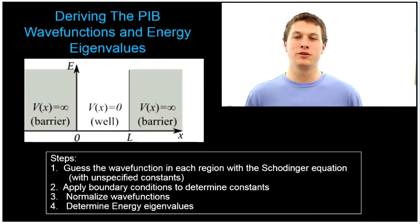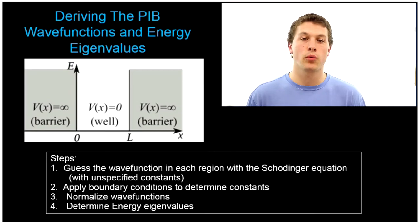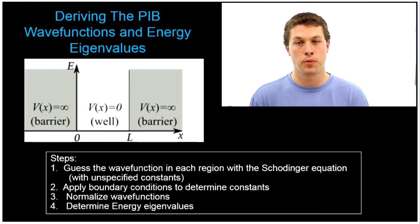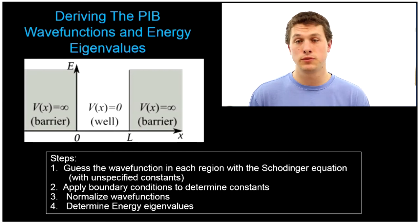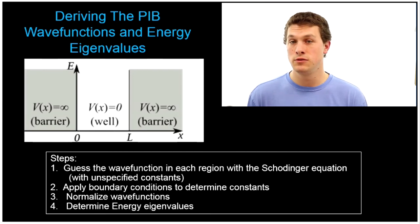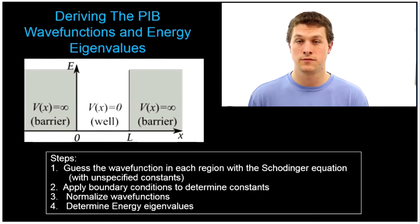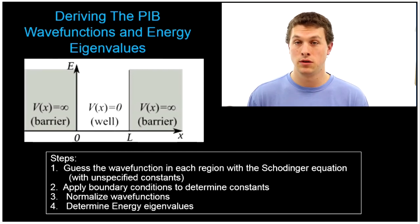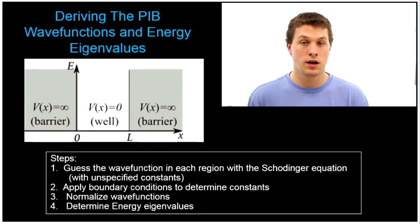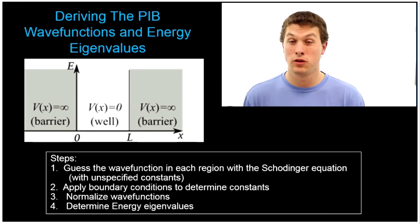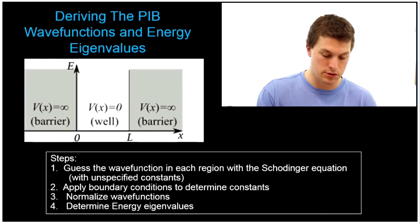Welcome to this episode of Real Chemistry, where we're going to derive the wave functions for the particle in the box. This is the first simple system that's often used in quantum mechanics or physical chemistry, where we take a potential and we figure out what the electrons or particles are going to look like if we put them in that potential.